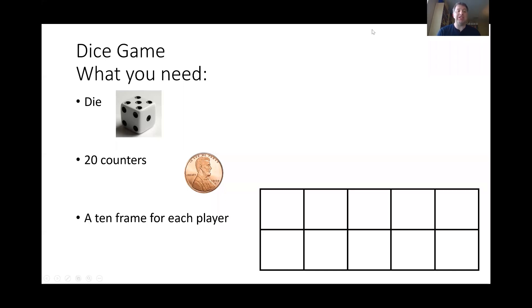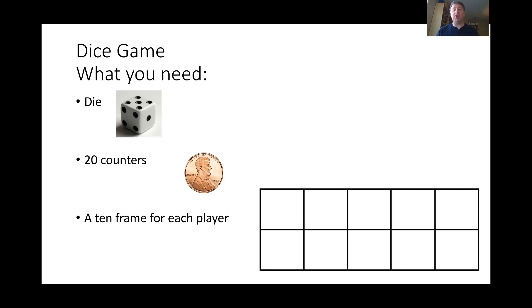So to play the dice game, this is what you need. You need a die — a die is what one dice is. Two dice, one die. You just need one die. You need 20 counters — I'm using pennies. And you need a 10 frame for each player. If you have more than two players, make a 10 frame for each of them. If you don't have anything to make a 10 frame with, you can use five groups to play. We'll talk about that probably at the end of the video.